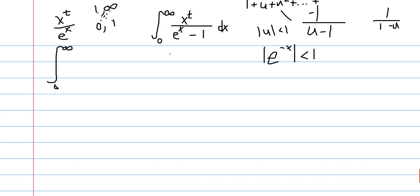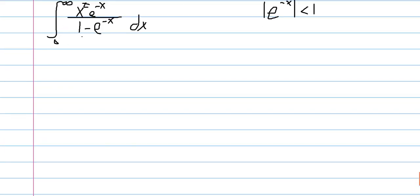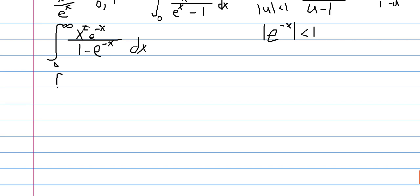So what I'm saying is that if we factor out an e to the x from the denominator and we bring it up to the numerator, then we get this expression. And so we're claiming that we can now use our power series of 1 over 1 minus u to turn this integral into a series, or say that we're integrating a series.